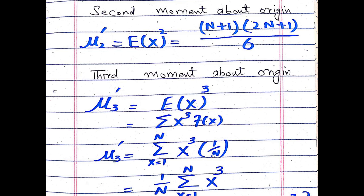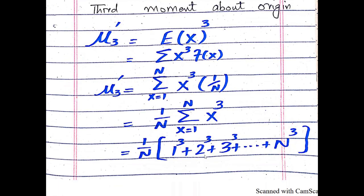Substituting the PDF value, we write (1/N)·x³, where x ranges from 1 to N. The range of the discrete uniform distribution is 1 to N, and its probability density function is 1/N. After inserting the values, we simplify this equation. We can take 1/N as a constant term outside the summation sign.